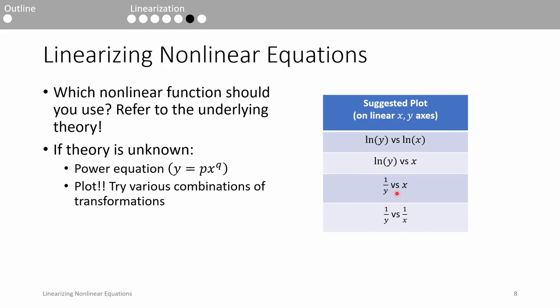For example, you should plot ln of y versus ln of x, then ln of y versus x, then 1 over y versus x, and finally 1 over y versus 1 over x. If the plot of, say, 1 over y versus x looks the most linear, then you should use the model corresponding to this equation which is the reciprocal model. Once again, because this is pulled from the table in the last slide, which is not all-encompassing, you may need to plot other combinations of y versus x.